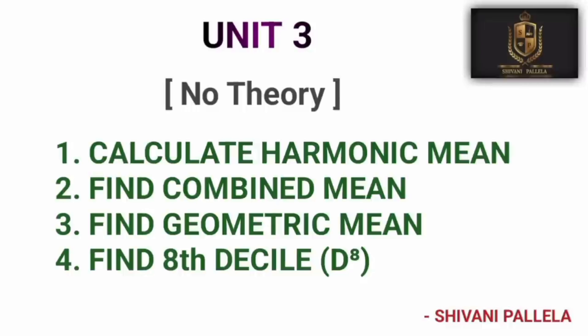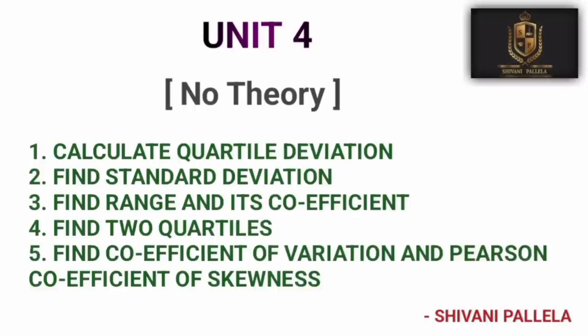In unit three there are no theory questions in Part A — only problems for four marks. Expected problems include finding the 8th or 9th decile, combined mean, harmonic mean, and geometric mean. Again, if you are perfect with the long questions, these short questions are already covered. Unit four also has no theory questions in Part A — only problems related to range, coefficient of quartile deviation, and skewness.